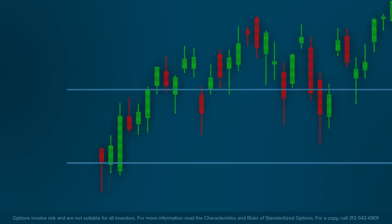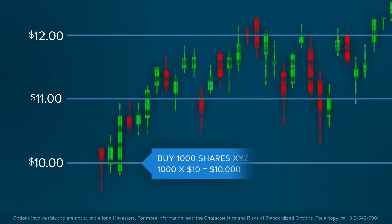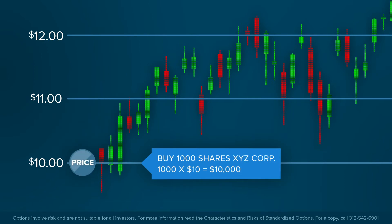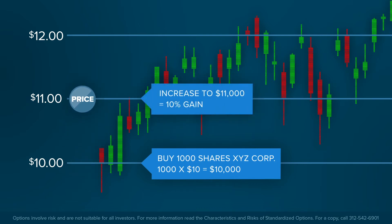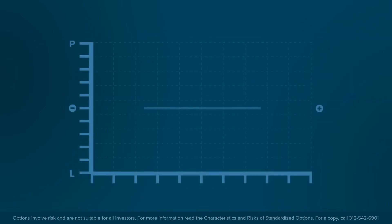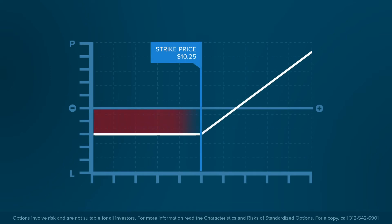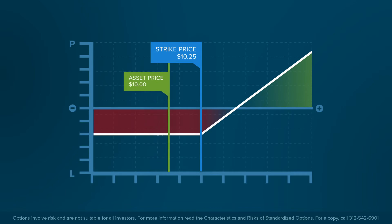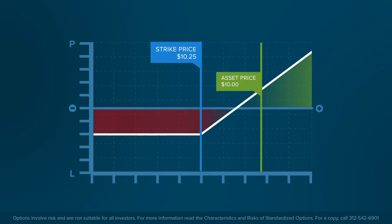For example, assume an investor buys 1,000 shares of company XYZ Corp at $10 each for an initial capital outlay of $10,000. If the share price increased to $11, the investor's capital would increase to $11,000 for a 10% gain. With option contracts, a 10% move in the value of the underlying asset could translate into a larger increase or decrease in the price of the option.